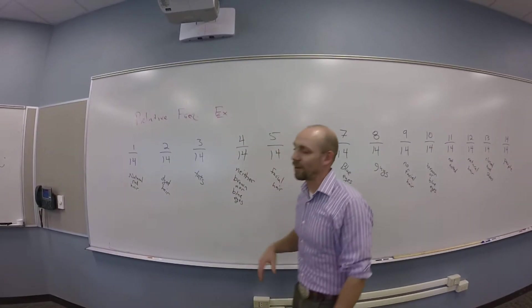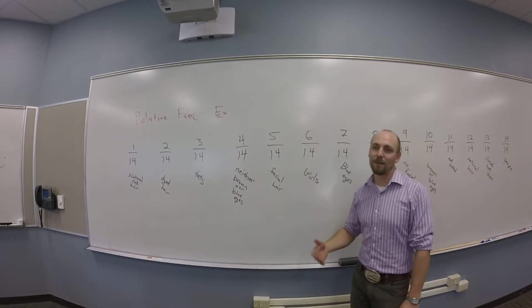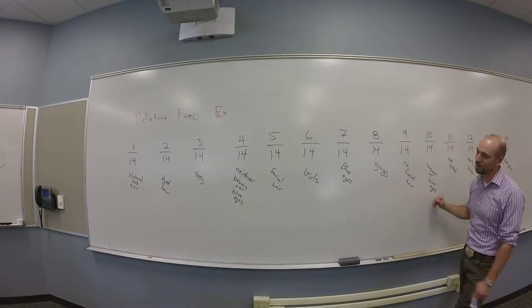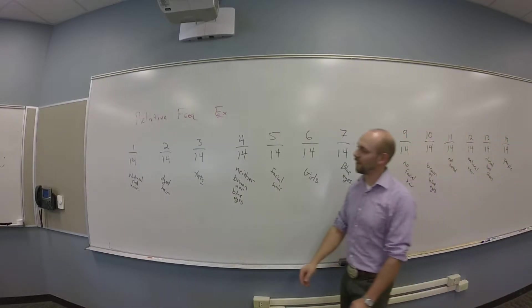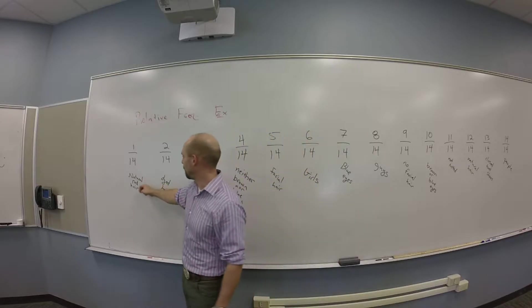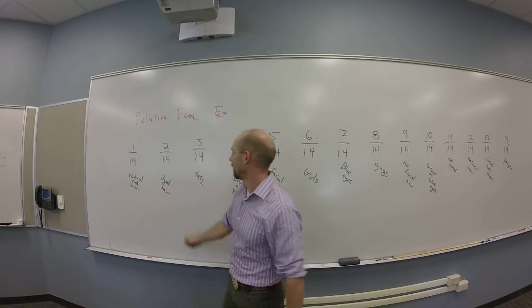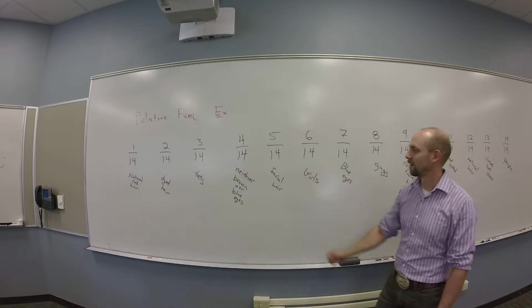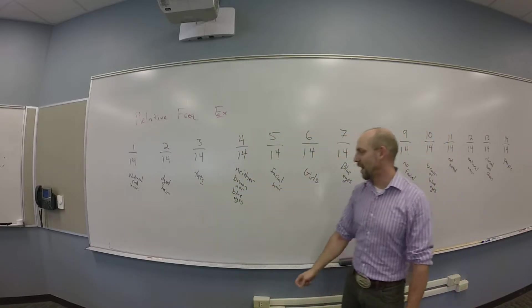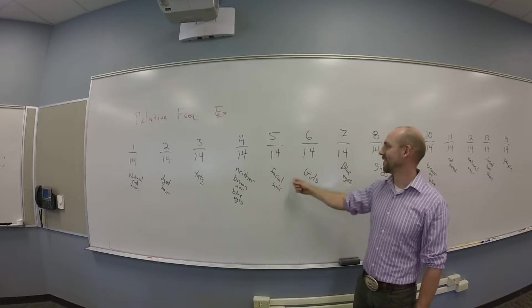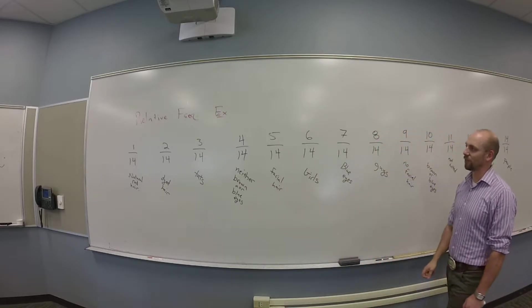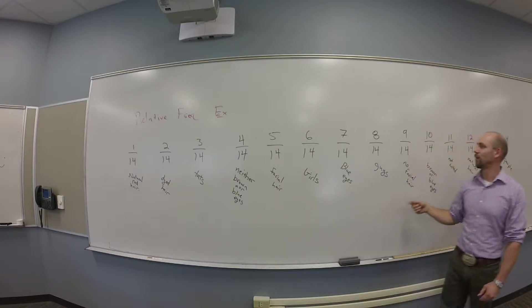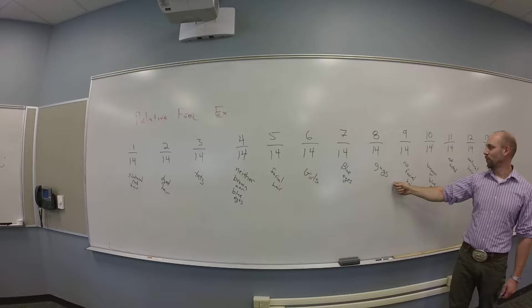Okay, so I want to give you some set operations. And you guys came up with all these relative frequency examples. So you found that 1 in 14 people had natural red hair, 2 in 14 had dyed hair, 3 in 14 had tats, 4 had neither brown nor blue eyes, facial hair was on 5 people, 6 people were girls, 7 people had blue eyes, 8 people were guys.